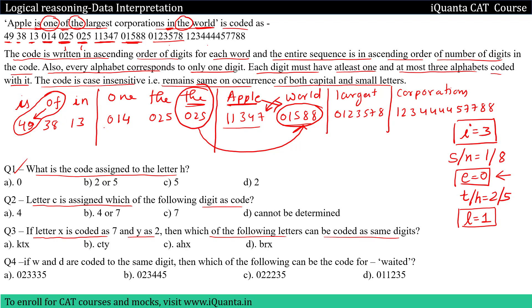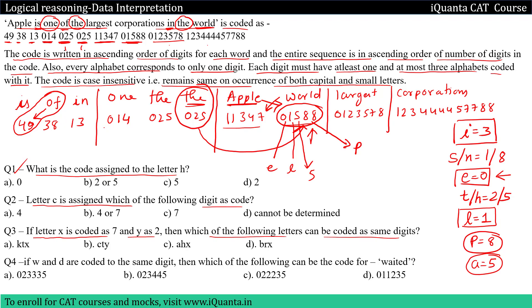As soon as I know that 'apple' is 01588, I can see that in 'apple' the letter P is repeating, and in 01588 the digit 8 is repeating. So P will definitely be 8. In 'apple', 8 is assigned to P, 0 is assigned to E, 1 has been assigned to L — only one digit remains, which is 5, and that can be given to only A. So A will be equal to 5.